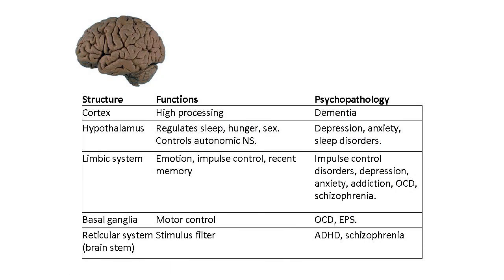These are some of the brain components that are important from the standpoint of psychopathology. The cortex is the surface of the brain, and that's what's involved in higher processing. That's what allows me to do this lecture, allows you to do math, and allows you to do most of the functions that require what we call thinking. When the cortex is affected, the psychopathology that results is dementia.